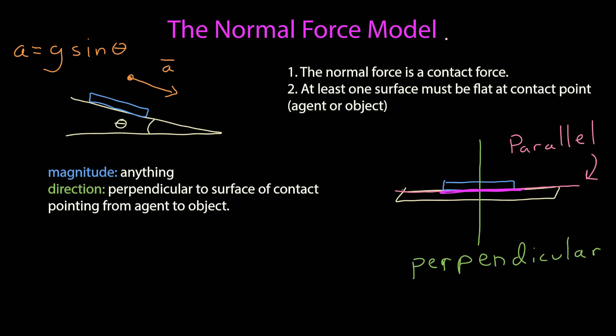Our model of the normal force is then this. The magnitude of the normal force can be anything, like any other contact force. But the direction has to be perpendicular to the surface of contact pointing from the agent to the object.